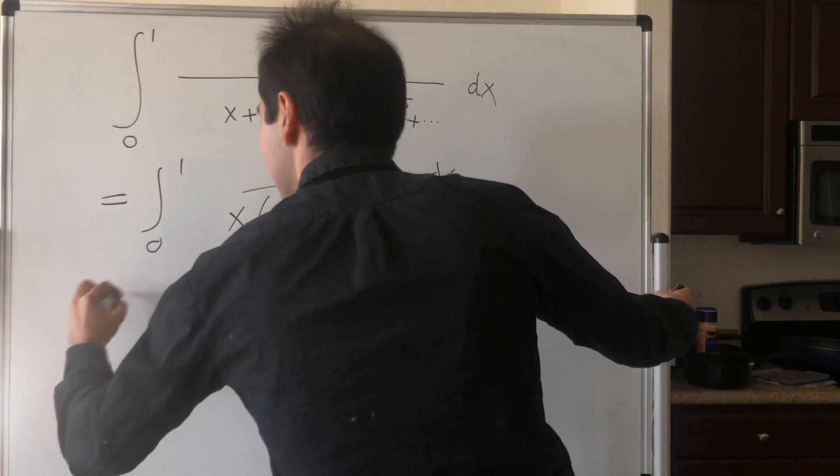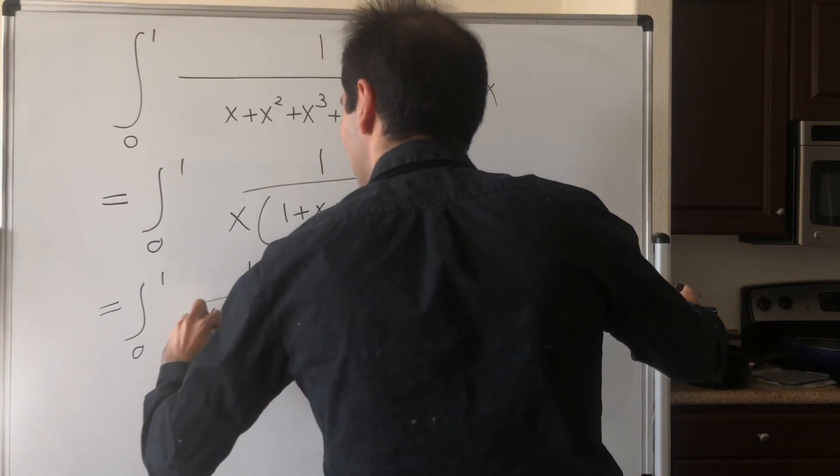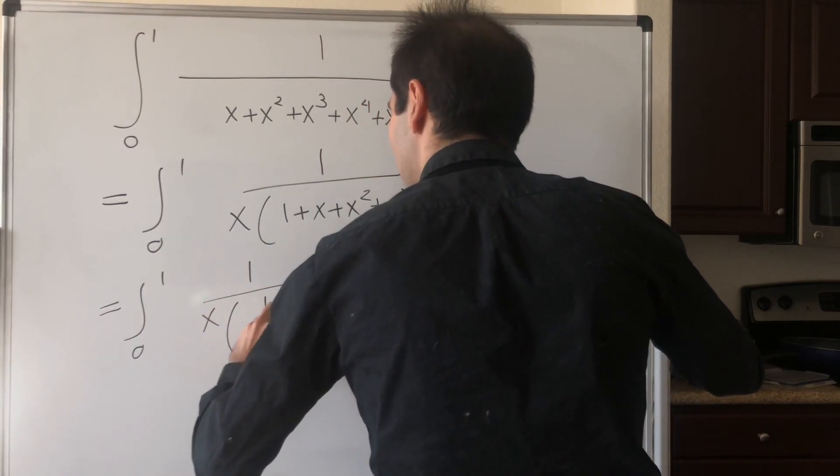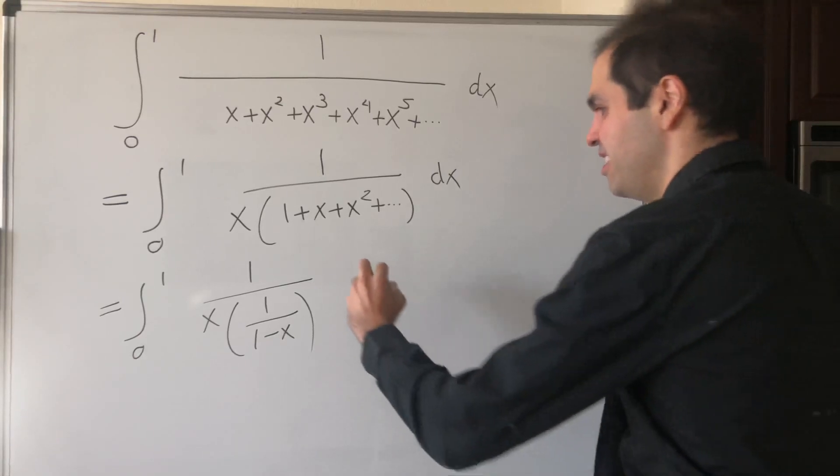And this becomes the integral from 0 to 1 of 1 over x times 1 over 1 minus x, because this is the geometric series.